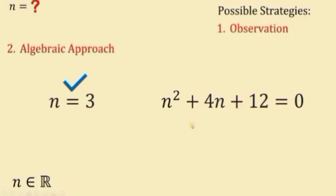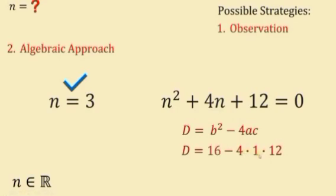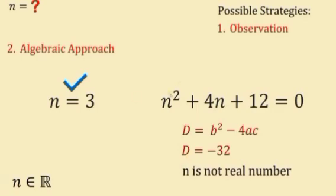Now, does n² + 4n + 12 = 0 give a real value for n? We check using the discriminant: b² − 4ac, where a = 1, b = 4, and c = 12. Substituting: 4² − 4(1)(12) = 16 − 48 = −32.